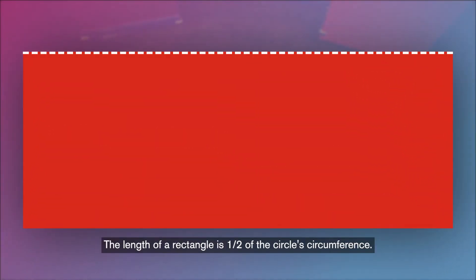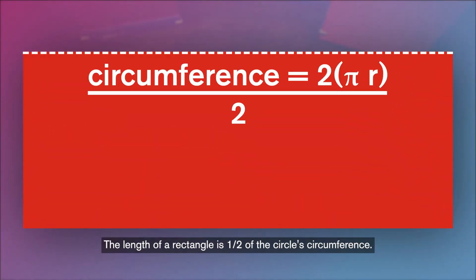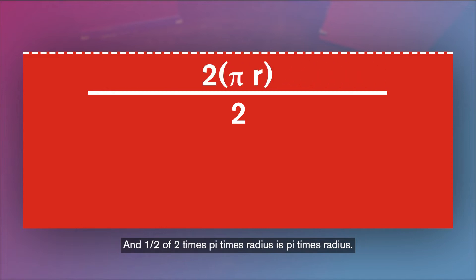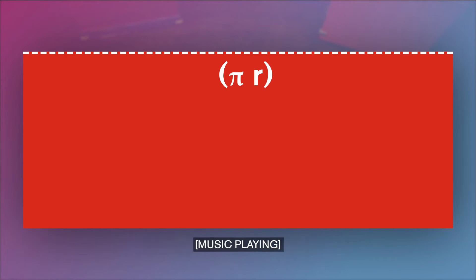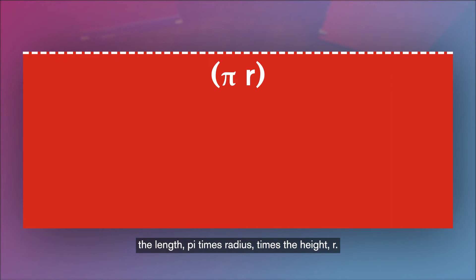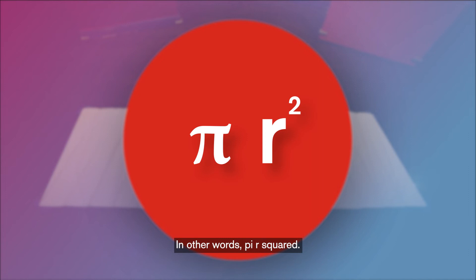But there's another way of doing this. The length of the rectangle is one half of the circle's circumference. The circumference of a circle is 2 times pi times radius. And one half of 2 times pi times radius is pi times radius. All you need is to multiply the length, pi times radius, by the height r — in other words, pi r squared.